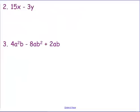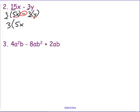Let me give you another example: 15x minus 3y. The greatest common factor of 15 and 3 is 3. So 3 times 5x gives me 15x and 3 times y gives me 3y. That common factor of 3 comes outside the parentheses, leaving 5x minus y inside. The factored form is 3(5x − y). To check it, distribute: 3 times 5x minus y equals 15x minus 3y — and we're back to where we started.